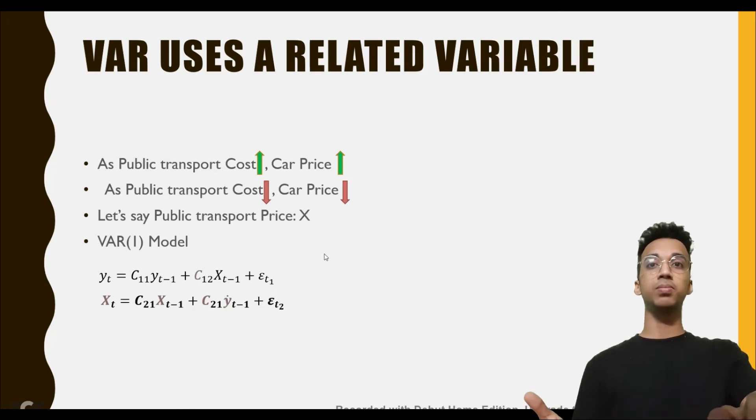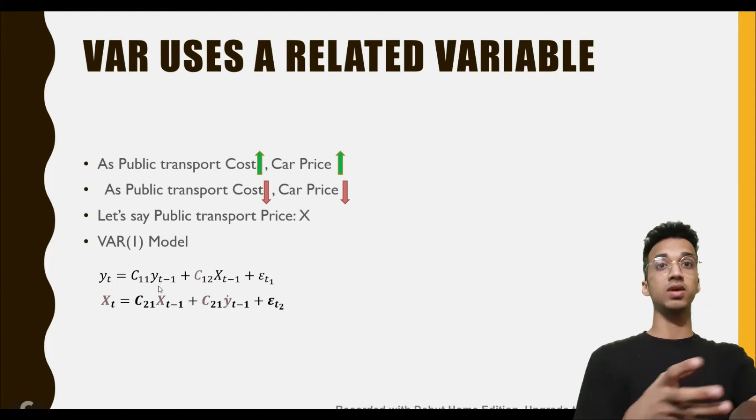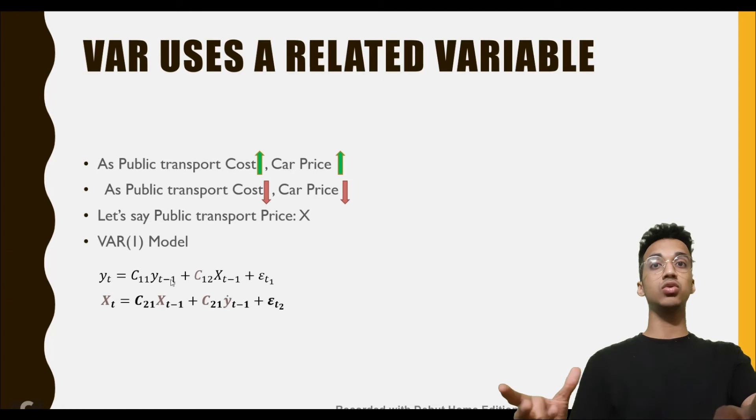The equation is pretty simple: y_t is dependent upon y_{t-1} plus x_{t-1} plus some error. Similarly, x_t equals some constant times its own previous value and the value of y in its previous time period.